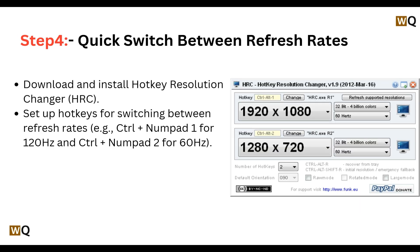The next step is to quickly switch between refresh rates. Download and install Hotkey Resolution Changer, then set up hotkeys for switching — for example, Control + Numpad 1 for 120 Hz and Control + Numpad 2 for 60 Hz.